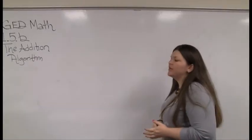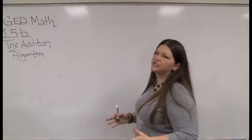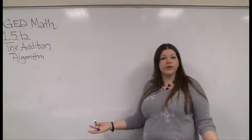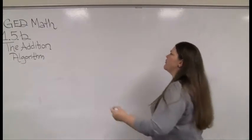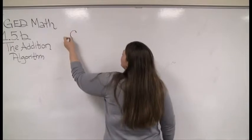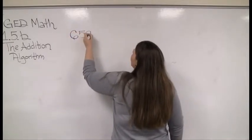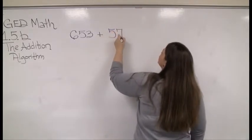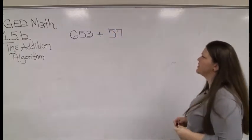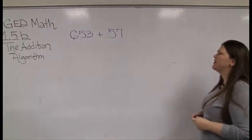So we are going to do a little video here to talk about addition, how to add large numbers. The first thing that I want to point out to you is if I were going to add two large numbers. So there we go, 653 plus 57.